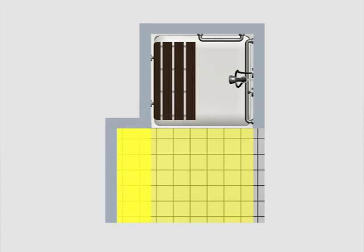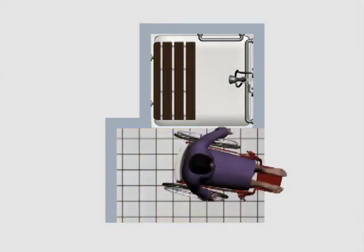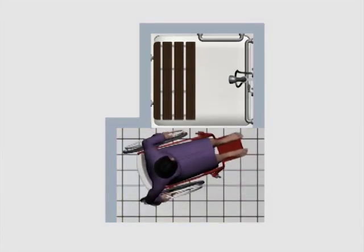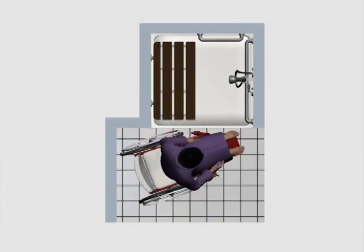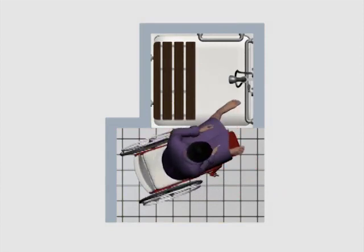This clearance provides space to operate shower controls and position for transfer. The additional space beyond the seat wall allows proper alignment with the seat for transfer.